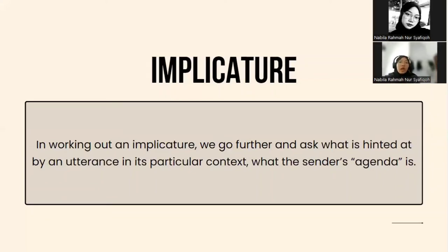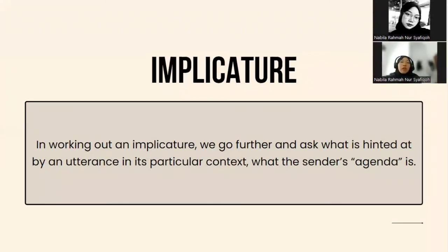In working out an implicature, we go further and ask what is hinted at by an utterance in its particular context — what the sender's agenda is. We would have to know more about the kind of relationship that Anna and Ben have, and about Charlie, and the look on the driver's face. But if we had been participants in these exchanges, we would have been able to judge fairly confidently whether Ben's reply conveyed sympathy, a reprimand, or an invitation to spend the night at her place, and whether the driver meant to convey annoyance or apology by his response to Charlie. Fairly obviously, the bus driver's answer can be taken as an implicit "no" in answer to Charlie's question.